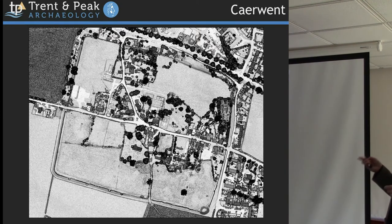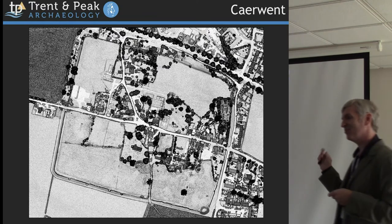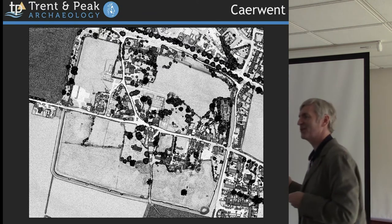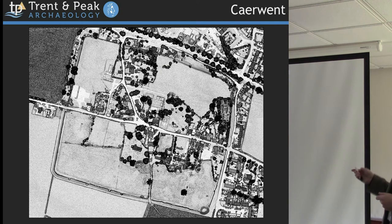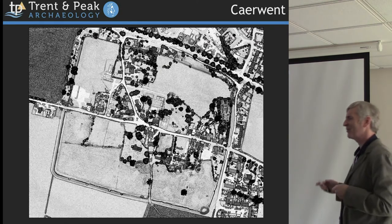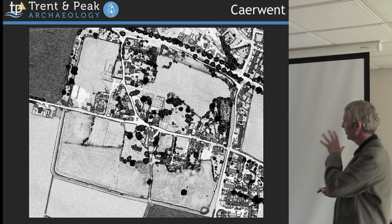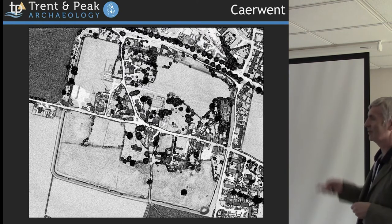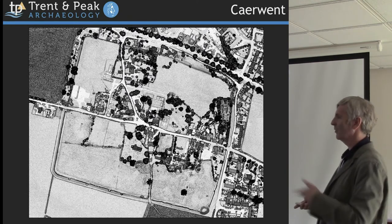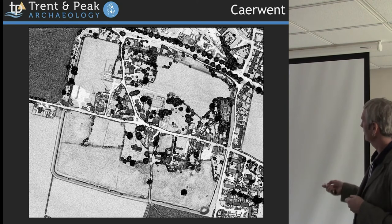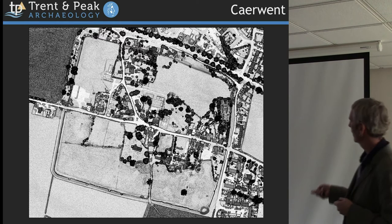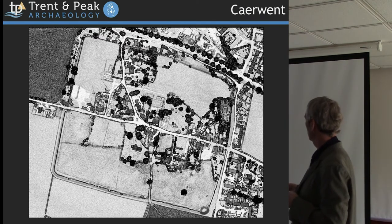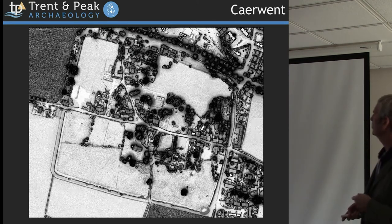There's 25-centimetre data coverage that the Environment Agency have done — they must have done it for somebody, as they don't usually do this as part of their standard suite of flood-risk mapping. There's a very detailed data set available. You can see details — in fact the structures that are exposed, the wall lines are all in there. That's the slope to begin with, and that's using the sky view factor modelling.